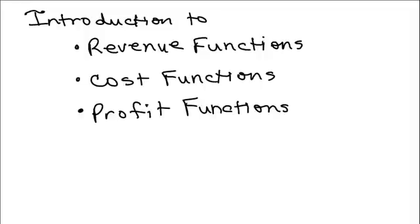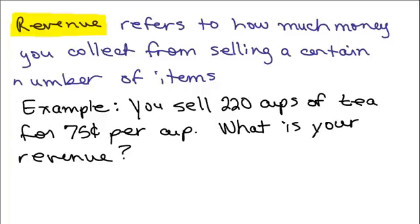This is an introduction to revenue, cost, and profit functions. Revenue refers to how much money you collect from selling a certain number of items. Here's an example: You sell 220 cups of tea for 75 cents per cup. What is your revenue?